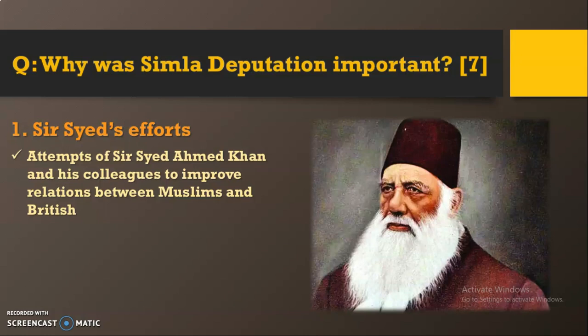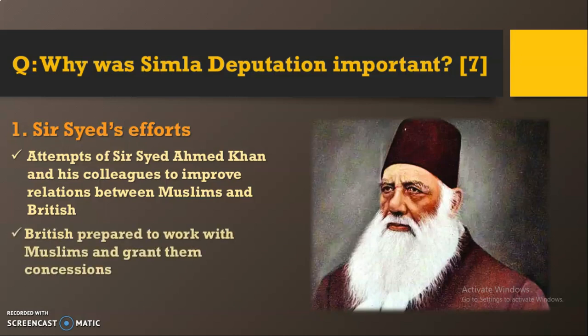The British acceptance showed that the attempts made by Sir Syed and his colleagues to restore the relationship between the Muslims and the British had been successful. As we know from the topic of Sir Syed Ahmad Khan, one of his basic works was to improve relations between the two. The proof was that the British were now prepared not only to work with the Muslims but to make concessions to them — as shown by separate electorates and more seats in the council, both accepted by Lord Minto.